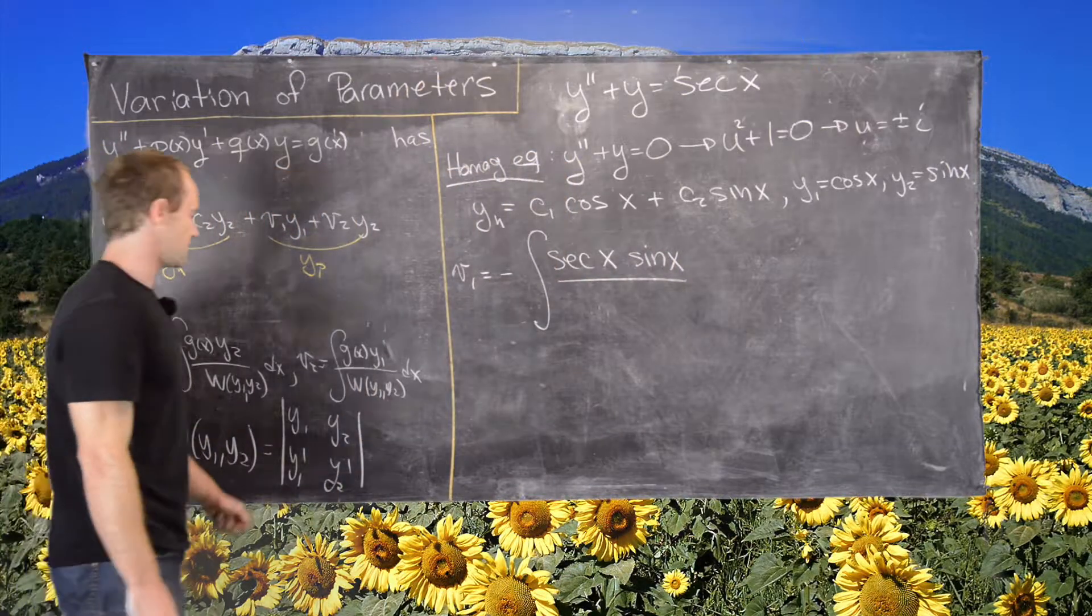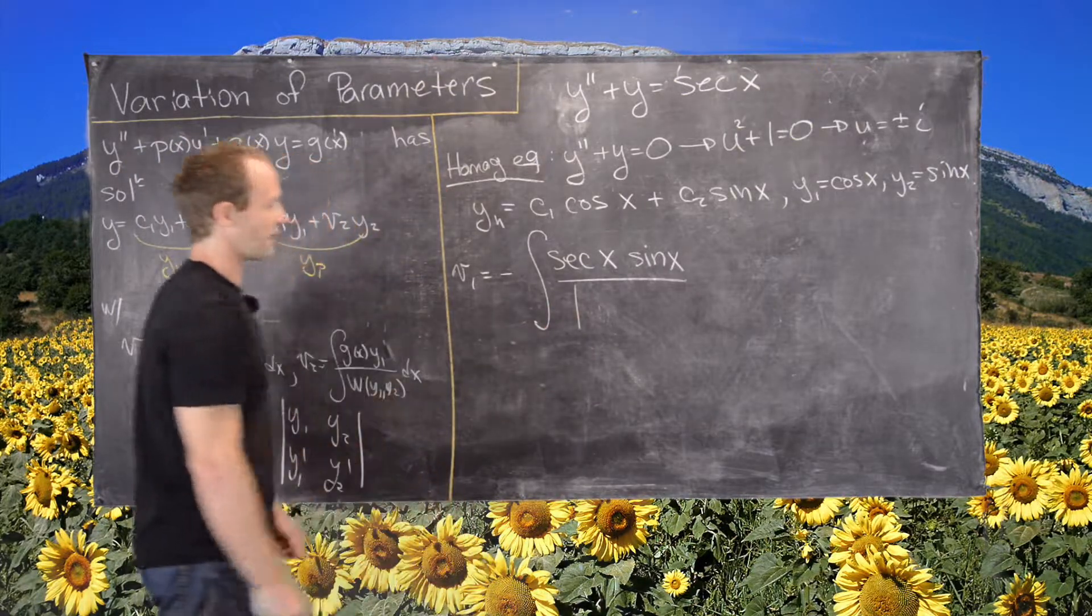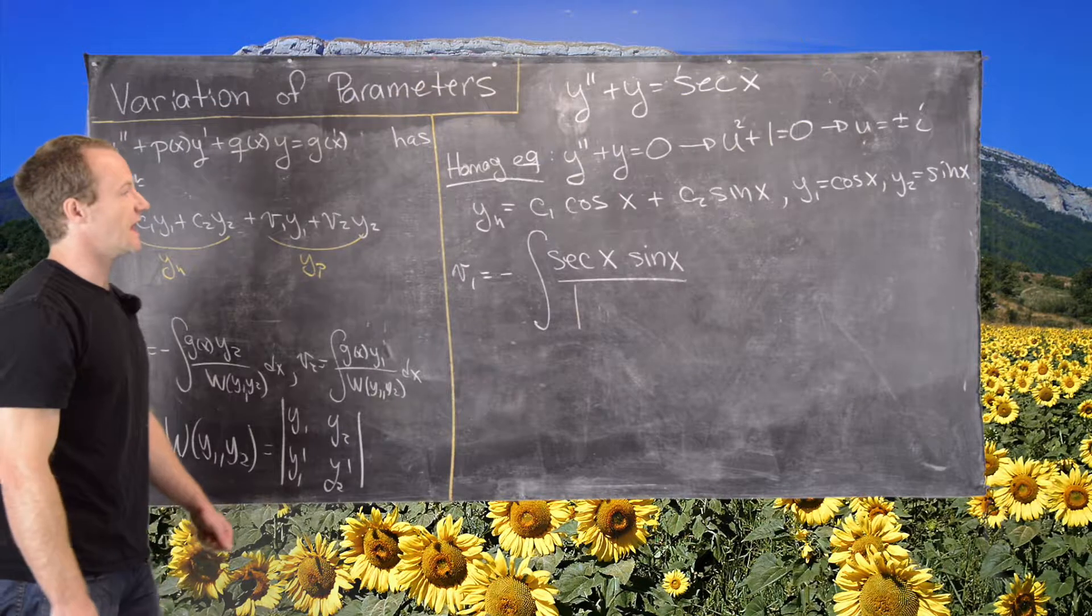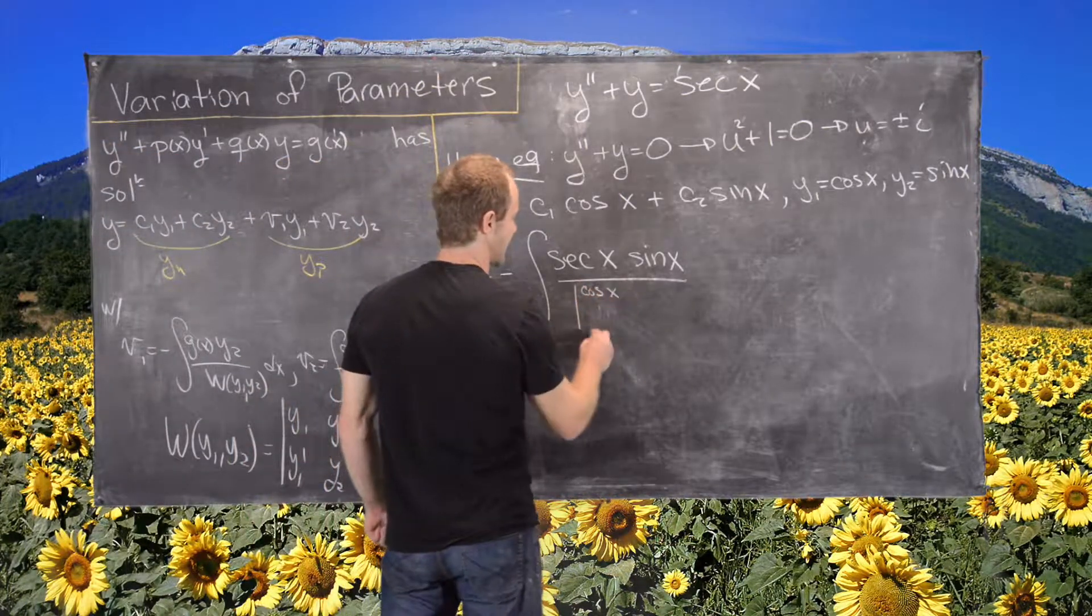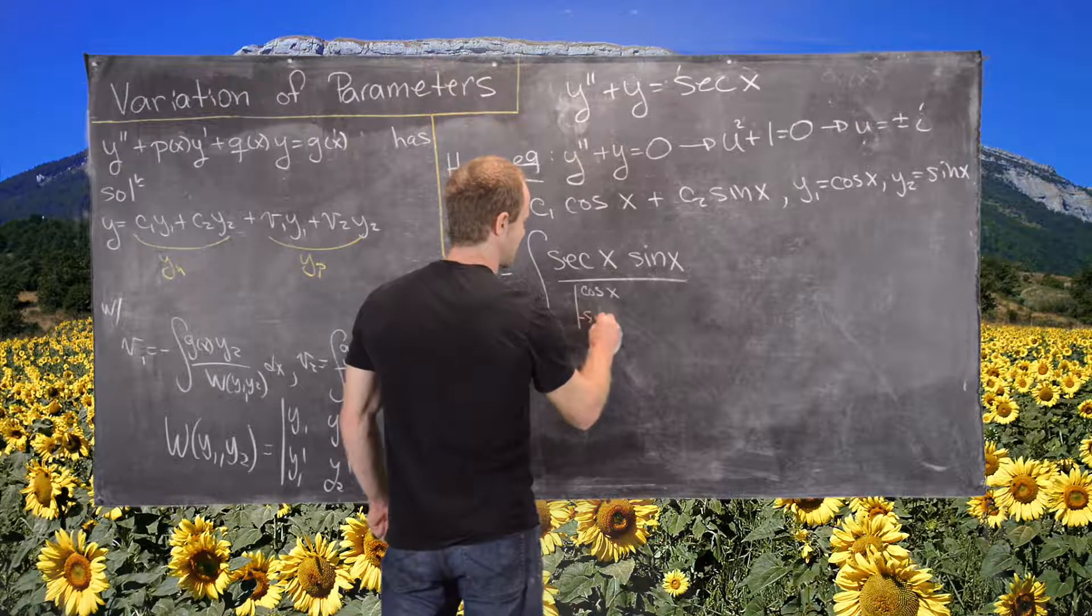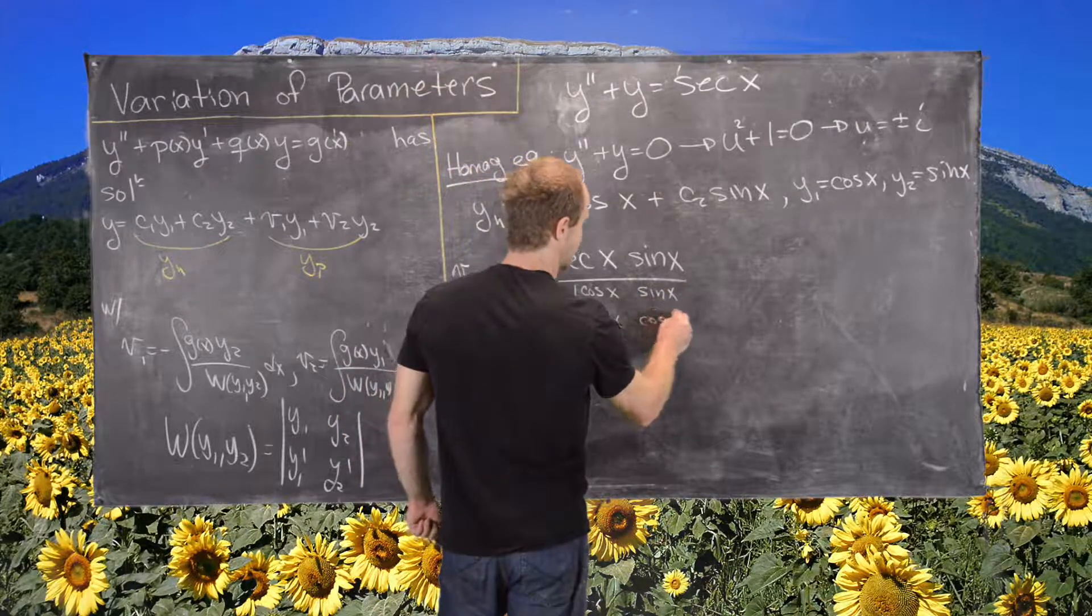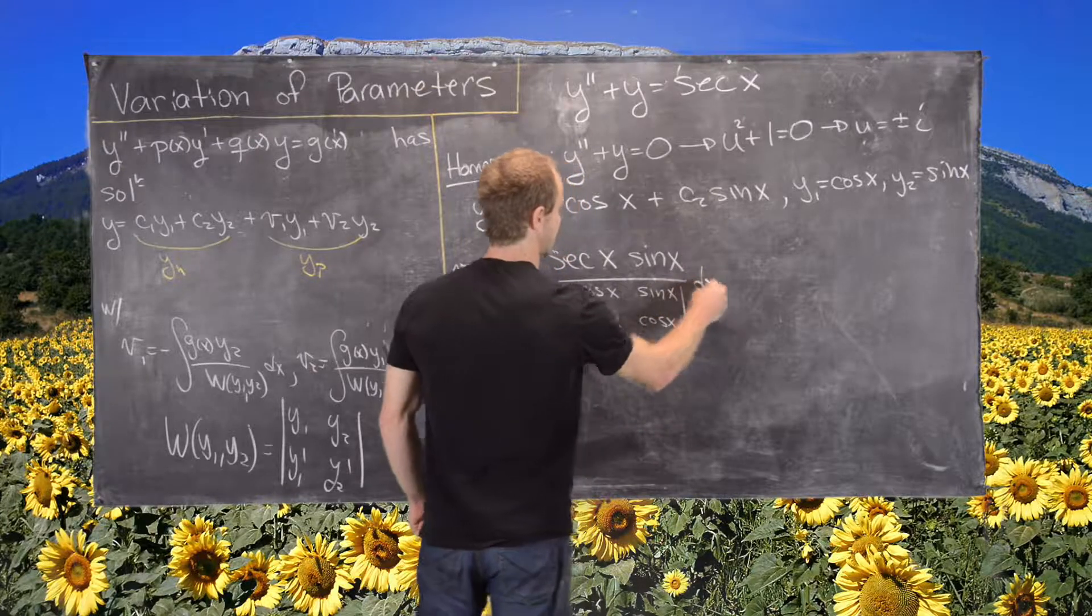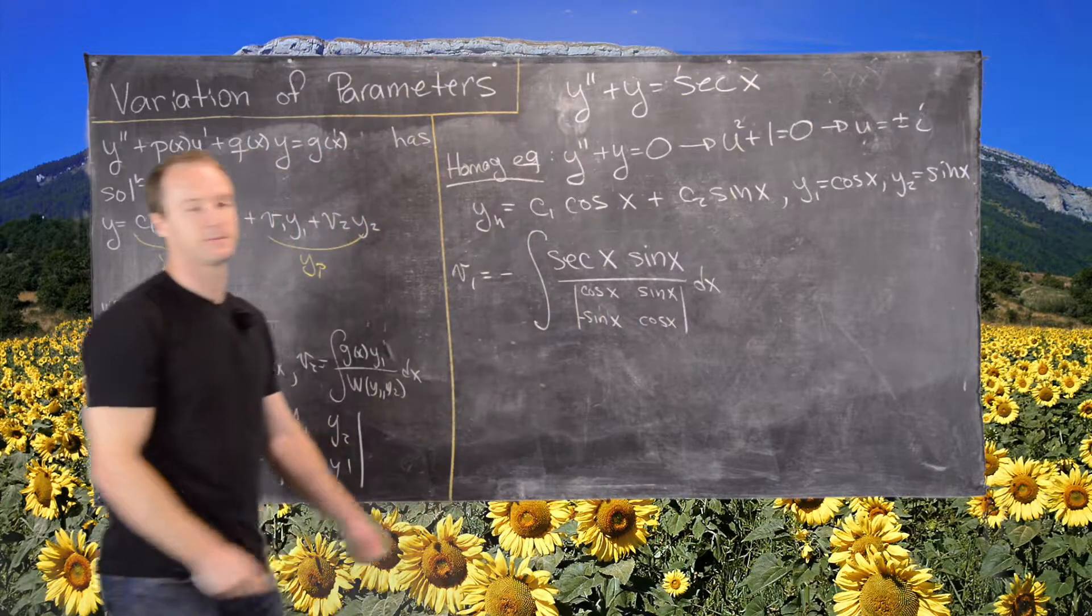So let's recall the Wronskian. So that will be the determinant. I'll do it out in all its details here. And then we'll just use the result as we move forward. So this will be the determinant of cosine of x, negative sine of x, sine of x, cosine of x. So we have y1, y1 prime, y2, y2 prime.